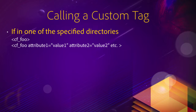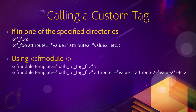A second way to call a custom tag is to use the cfmodule tag of ColdFusion. With the cfmodule tag, you need to specify the template attribute, which is the path to the custom tag file. That allows you to store your custom tag files anywhere in your application because you specify which custom tag you want to use in the template attribute. You can also pass additional attributes to the custom tag using the key-value pair syntax shown on the slide.